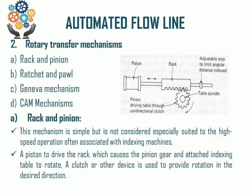The rack and pinion mechanism is the most famous and popular mechanism used for the rotary conveyor mechanism, where the table is a dial-shaped circular table on which the job moves in a circular or rotary manner.